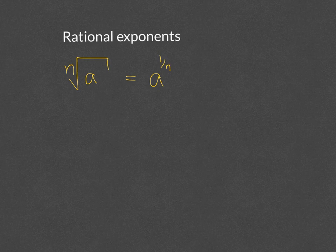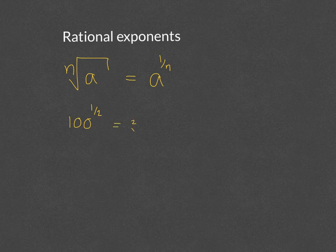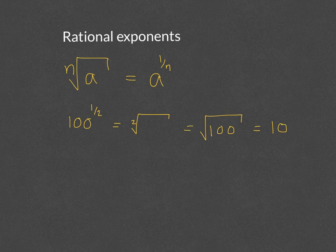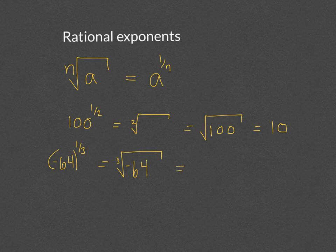For example, 100 to the 1/2 power can be rewritten as the square root of 100, which is 10. Or if we have negative 64 to the 1/3 power, that's the cube root of negative 64, which gives us negative 4.